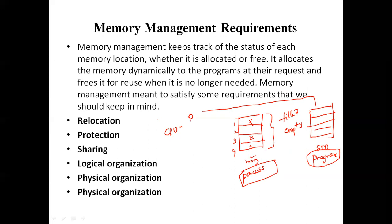So memory management dynamically allocates memory. Suppose the CPU wants a particular instruction that resides in secondary memory. As the CPU requests it, we get that instruction and check for free space. As free space is available, the instruction is loaded dynamically at that instant of time. Memory management needs to satisfy some requirements: the first one is relocation, protection, sharing, logical organization, and physical organization. We will see each of these requirements and why they are necessary.